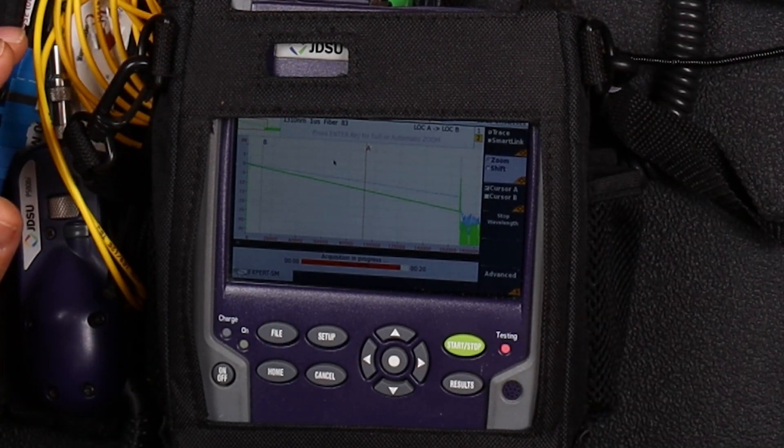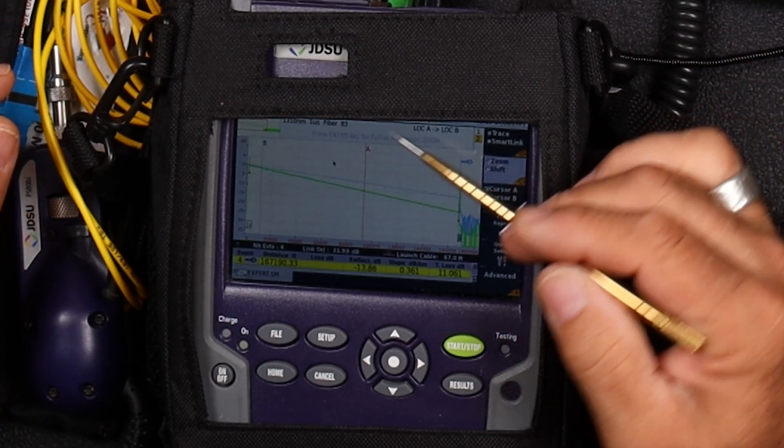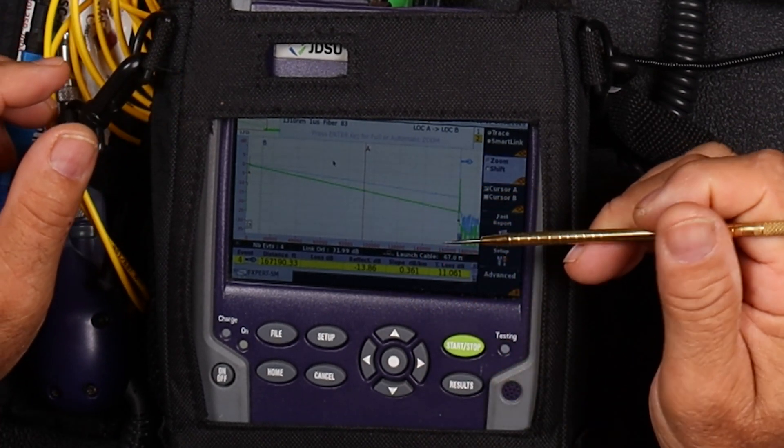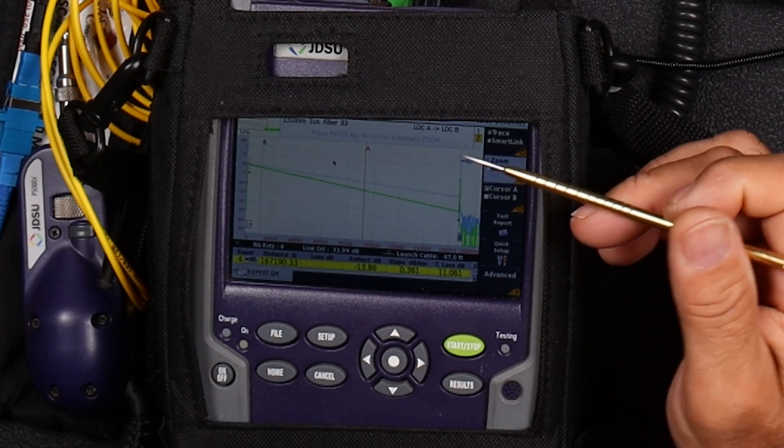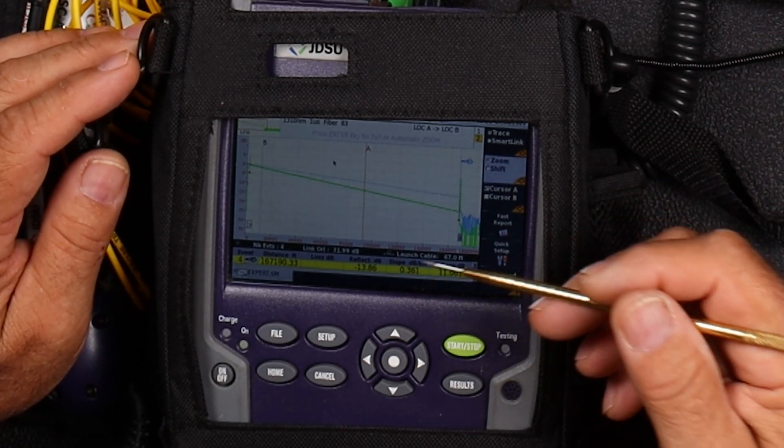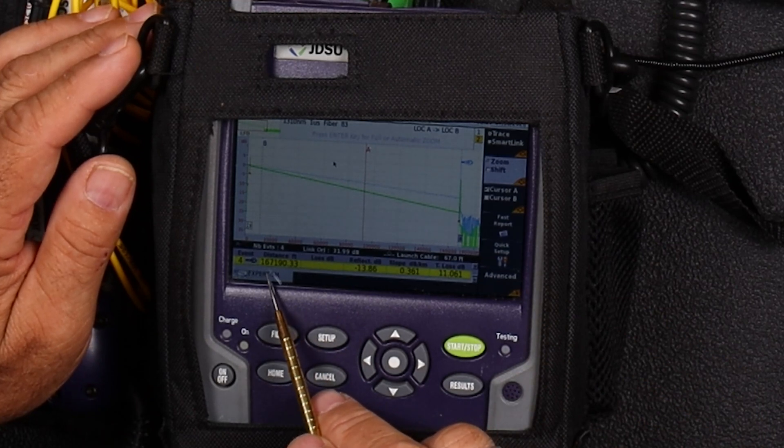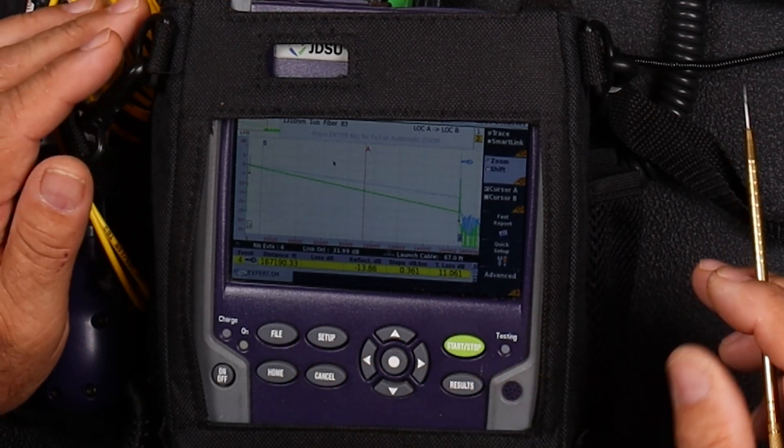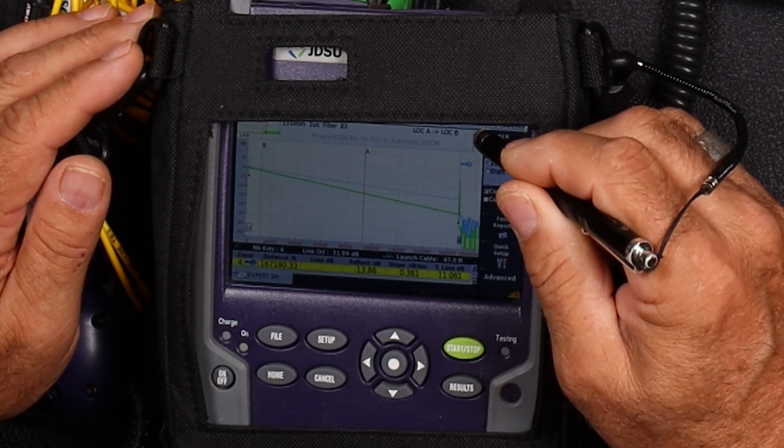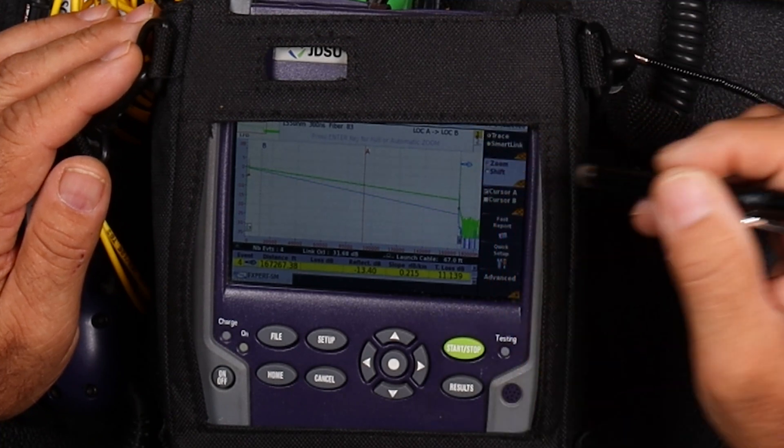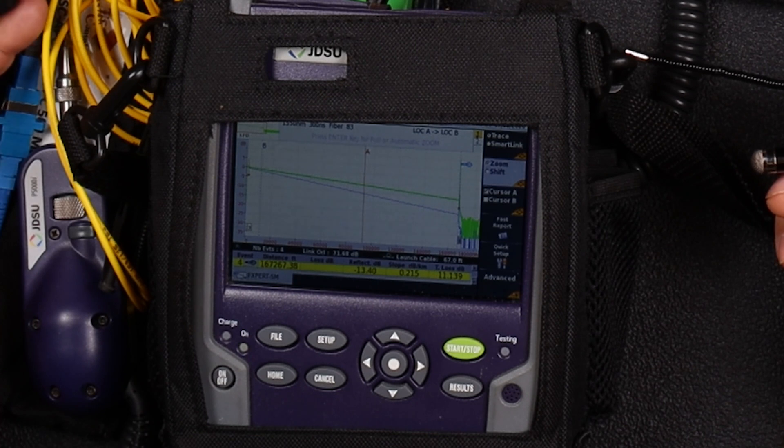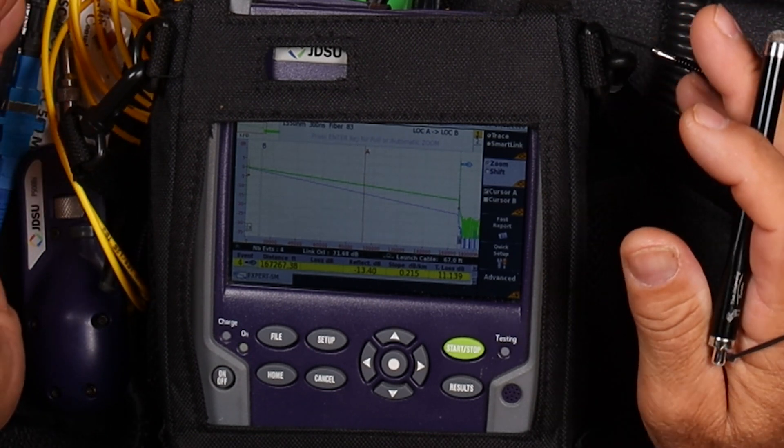As you can notice right now, we've got up at the top, if we can see this, it says 1310. Our 1310 is the green trace right now, which is active. And we can see that they're both pretty much the same. We're at 167,190 feet. And if we go over to our 1550, then our 1550 is 167,267.38 feet. Pretty close there, right?